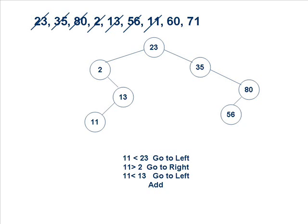The next number is 11. We compare 11 first with 23 — it is smaller, so we move left. We compare 11 with 2 — it is larger, so we move to the right hand side of 2. We find another node already there with value 13. We compare 11 with 13 — since 11 is smaller than 13 and the left side of 13 is empty, we place 11 as the left child of 13.